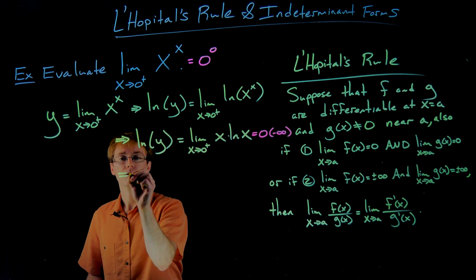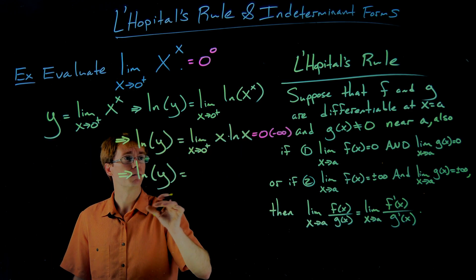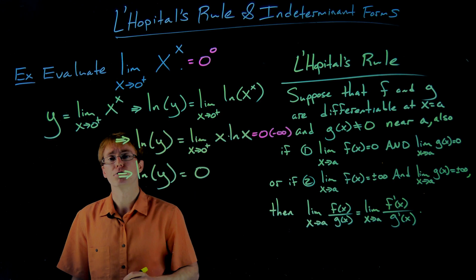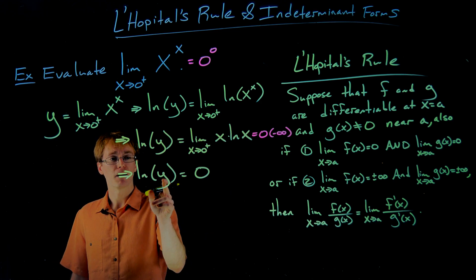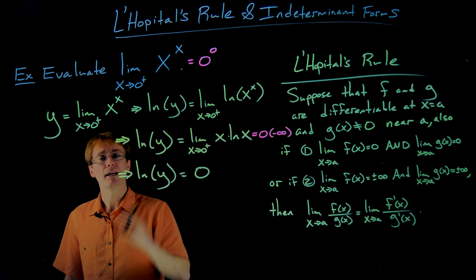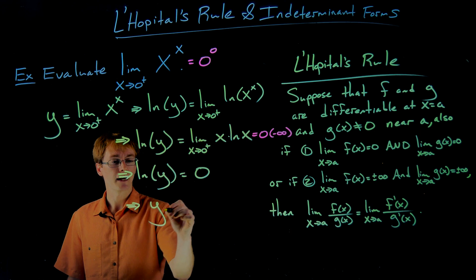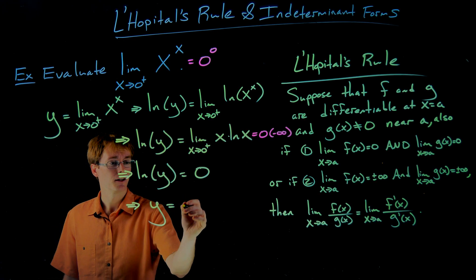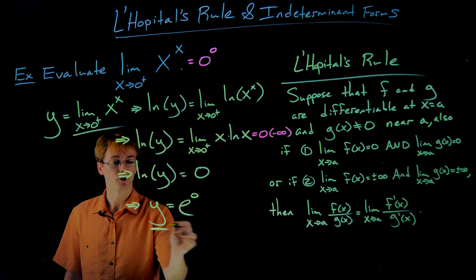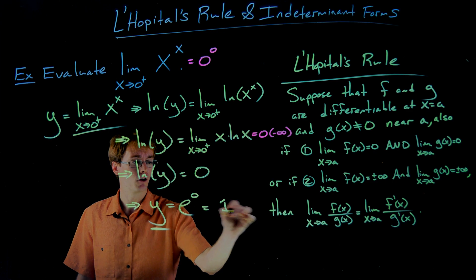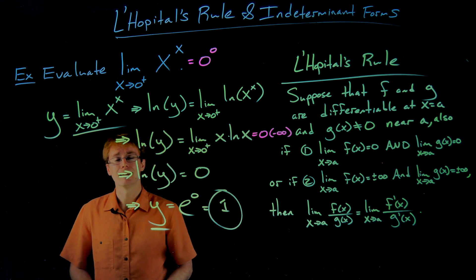Using our result from earlier, we know the natural log of y equals 0. But remember, that is not our final answer — y represents our original limit. We have the natural log of our y value, so we need to solve for y. Using properties of exponentials and logarithms, ln(y) = 0 means y equals e to the power of 0. Since e⁰ equals 1, the limit as x approaches 0 from the right of x^x equals 1.